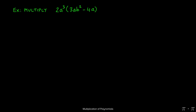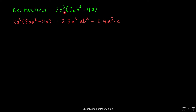Let's say we're asked to multiply 2a cubed by the binomial 3ab squared minus 4a. We start by distributing and putting the like terms together. So 2 times 3 can be written by themselves at the beginning, a cubed times a, and then b squared can be written next. Similarly, 2 times the negative 4 will give us a negative 2 times 4, and a cubed times a can be written by themselves at the end.